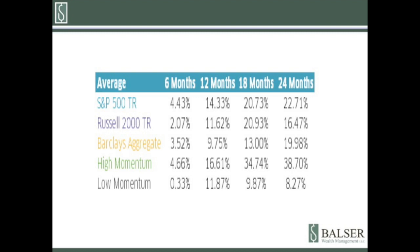This table shows the average forward returns of all the observations. Twelve months from the first inversion observation, the returns are good across the board. Two years after the inversion, the returns are still good, but the rate slows down. Momentum returns remain strong along with the broad market 12 months forward. The spread between high and low momentum is decent after a year, but unlike the broad indexes, the spread really accelerates during the second year. Each yield curve inversion has been different, and I will examine each one individually next.